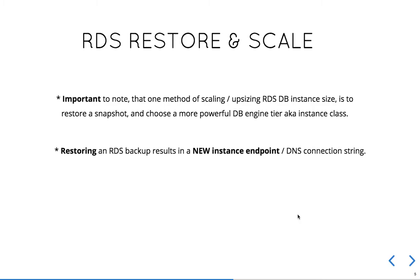The RDS restore feature is important to note — it is used to scale in many cases. When you snapshot or restore a database from an automated backup, you have the choice to restore to a higher class, a more powerful database engine. For example, you can go from a T2 medium to an M3 large when you restore. People typically restore and scale.